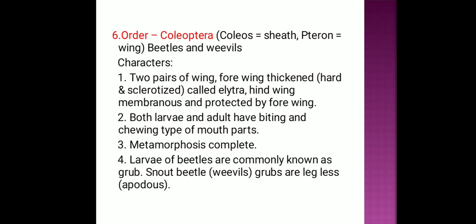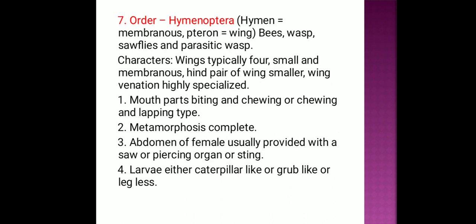Order Coleoptera: 'Coleo' means sheath, 'ptera' means wings. Beetles and weevils are examples. More than 3 lakh 20 thousand species present worldwide, mostly in cosmopolitan regions. These insects are very minute to large. Two pairs of wings present; the wings used for flying are modified into hard horny cases.